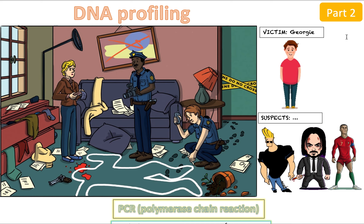So in the previous video, in part 1, you walked onto a crime scene and found that the victim was Georgie. You interviewed a witness who said Georgie had many enemies: Johnny Bravo, John Wick, and Ronaldo. Your scientist friend told you that the blood on the floor was not only from Georgie, the victim, but also from the murderer.